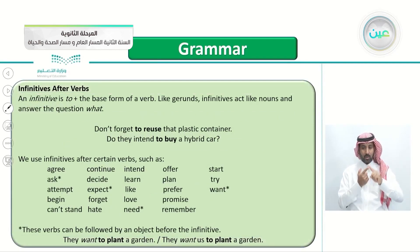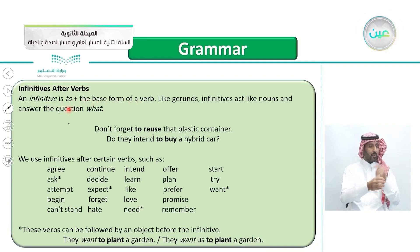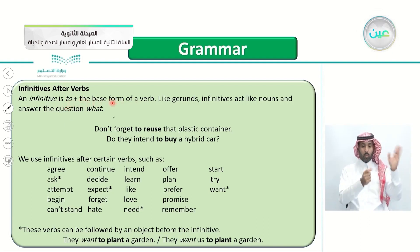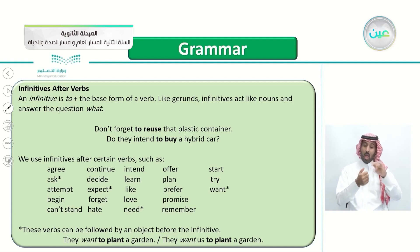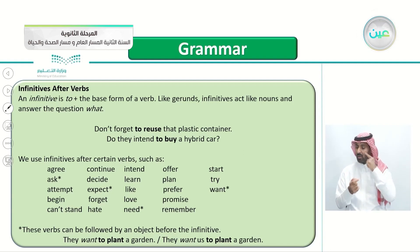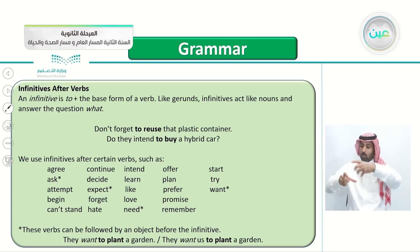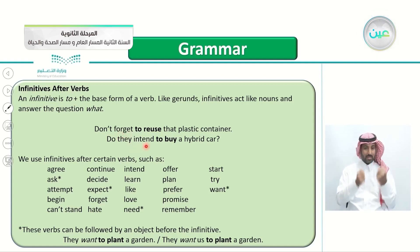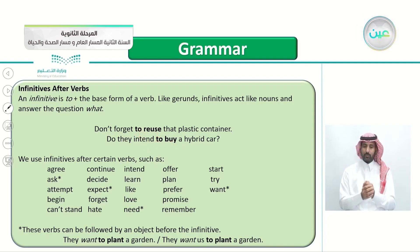Infinitives after verbs: an infinitive is 'to' plus the base form of the verb. Like gerunds, infinitives also act like nouns and answer the question 'what'. For example: 'Don't forget to reuse the plastic container' or 'Do they intend to buy a hybrid car?' — the verbs forget and intend came before the infinitive.